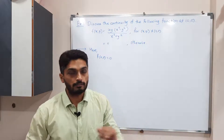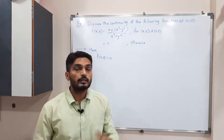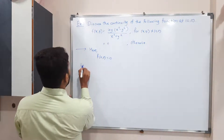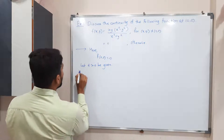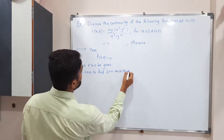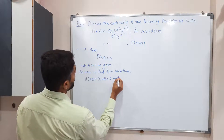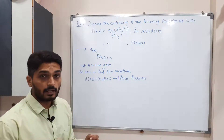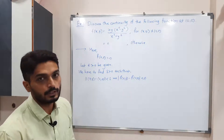I am going to use the epsilon-delta definition. In this approach, we take some epsilon and try to find a delta in terms of epsilon that satisfies the definition. Let ε > 0 be given. We have to find δ > 0 such that ‖(x,y) − (0,0)‖ < δ implies |F(x,y) − F(0,0)| < ε. Our choice of delta must satisfy this condition. Let us first work out the value of |F(x,y) − F(0,0)|, and then decide which delta to take.